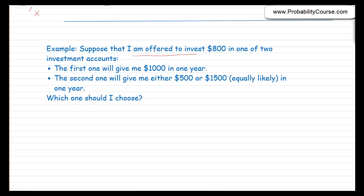Suppose I am offered to invest $800 in one of two possible ways. The first way will give me $1,000 in one year, and the second one will give me either $500 or $1,500, equally likely. The question is: which one should I choose? I'll represent the money received from the first option as x and from the second option as y — these are two random variables.